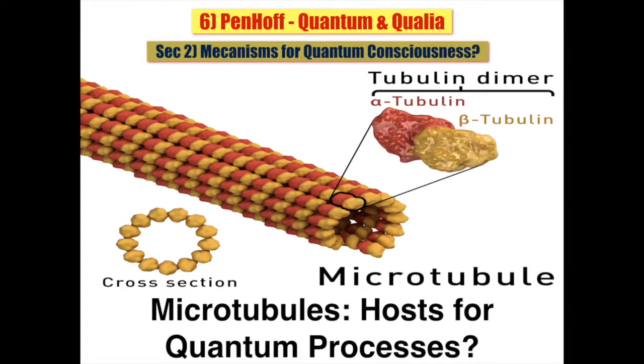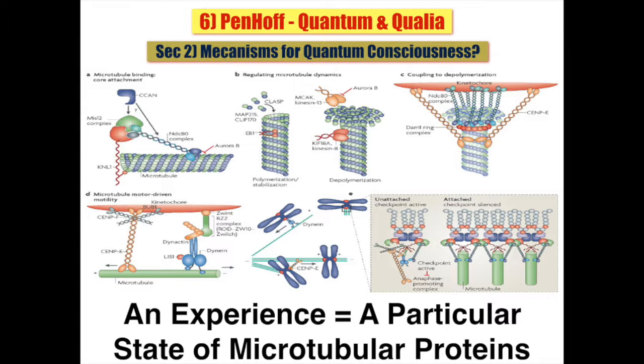Microtubules are composed of tubulin protein dimer subunits. Dimers consist of two identical molecules linked together. The dimers each have hydrophobic pockets that are 8 nanometers apart and that may contain delocalized electrons. These are electrons in a molecule which are not associated with a single atom. Hameroff proposed that these delocalized electrons are close enough to become entangled.